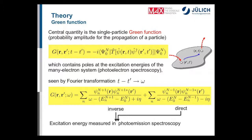These excitation energies are what you would measure in photoemission spectroscopy. In photoemission, either an electron is emitted (direct photoemission), relating to the N−1 particle system, or an electron is added to the system, relating to the N+1 particle system. Now, how do we actually calculate this Green function?